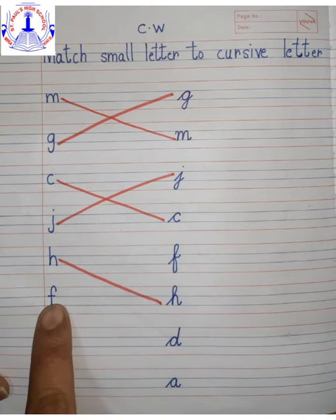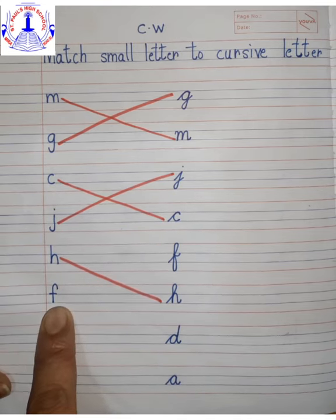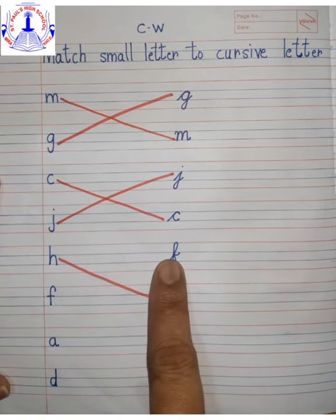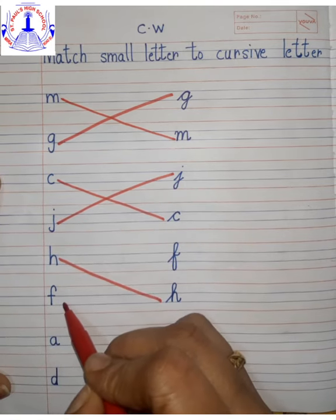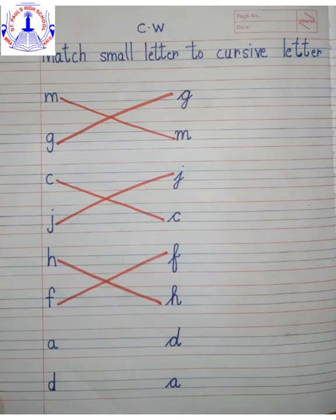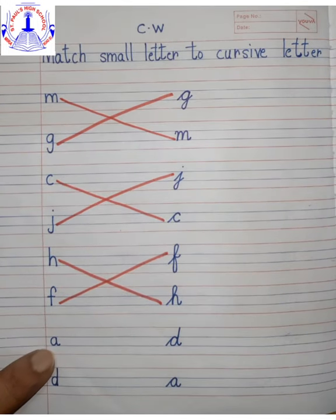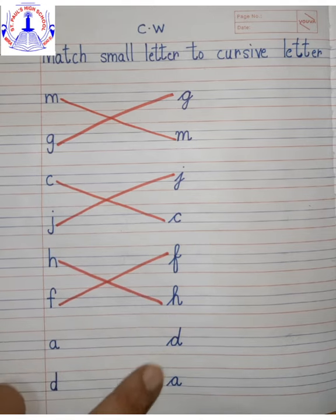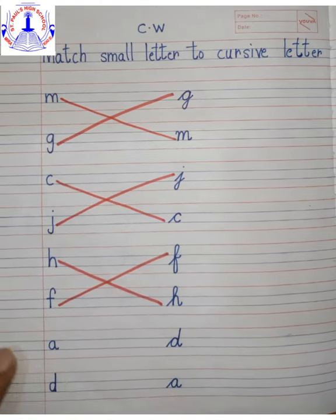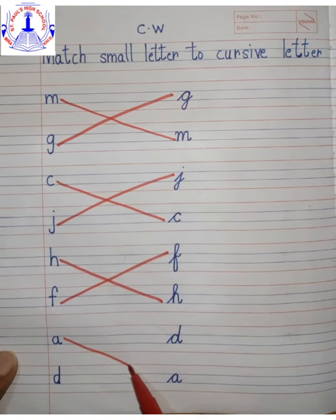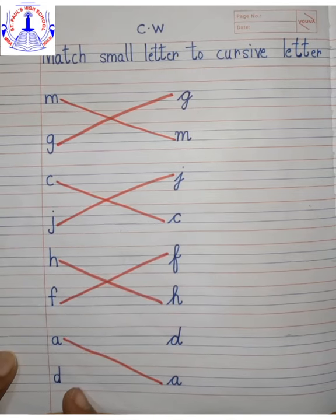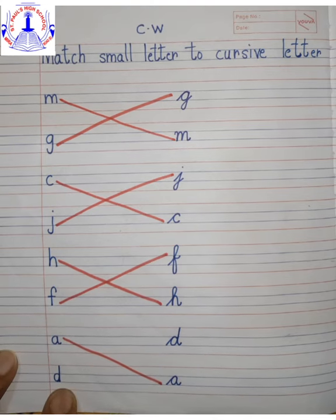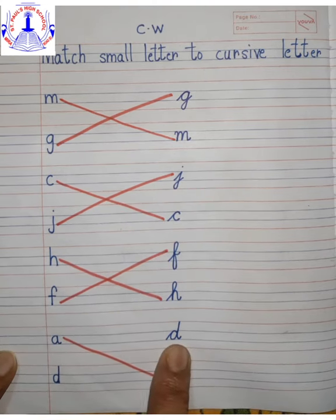Now next, what do you see? This is small letter f. We have to match with cursive letter f. So here is cursive letter f. Come on, match f with cursive letter f. Next is small letter a, and we are going to match with cursive letter a. Come on, match. Last one is letter d — match d with cursive letter d.